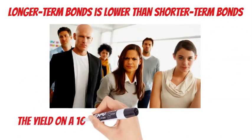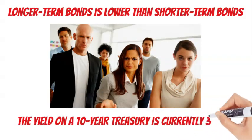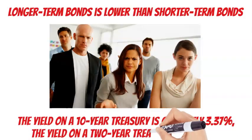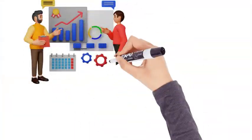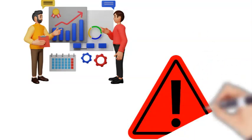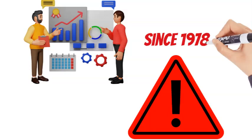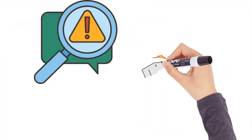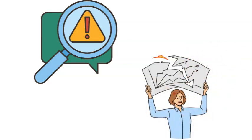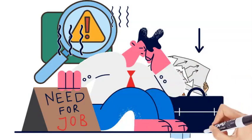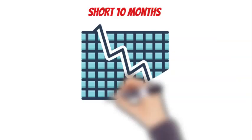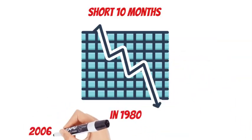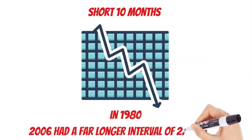The yield on a 10-year treasury is currently 3.37%, whereas the yield on a 2-year treasury was 4.06% as of late January. This indicates that the markets are pricing in a recession, and this warning has never been inaccurate since 1978. The only issue is that while this is an excellent sign for warning us when a downturn is approaching, it is not particularly efficient in providing an actual date for the arrival of a recession. As opposed to the short 10 months that passed between the inversion and the subsequent recession in 1980, 2006 had a far longer interval of 22 months.